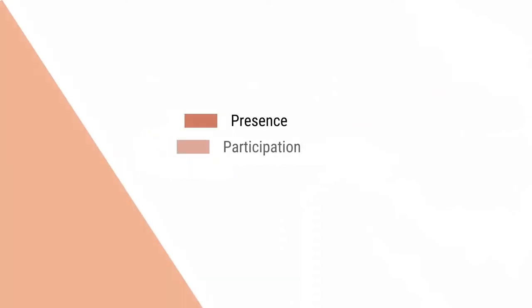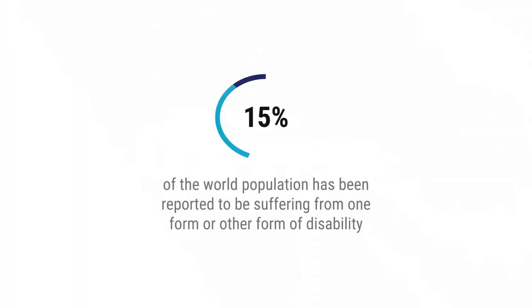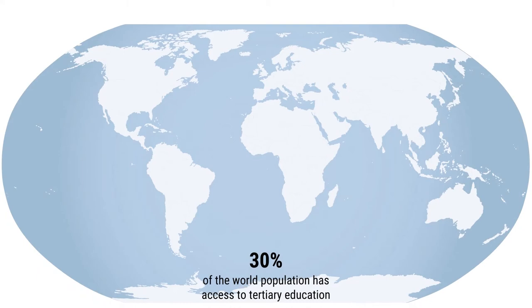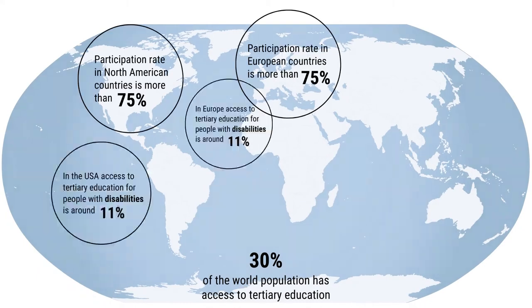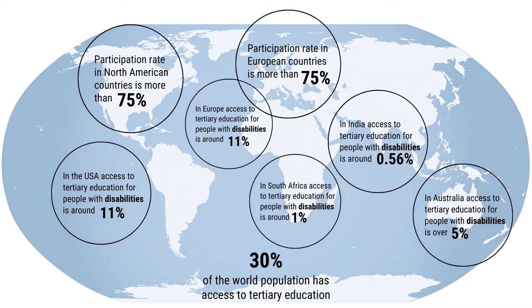Access to education is based on four values which are central to inclusive education: presence, participation, acceptance and achievement. 15% of the world population suffer from one form or another of disability. The percentage of differently-abled people going for education, particularly higher education, is very much negligible. Access to tertiary education for people with disabilities in India is as low as 0.56%.